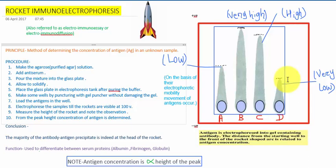Then place the glass plate into the electrophoresis tank. Before that, you need to pour the buffer solution into the electrophoresis tank. Then you need to make some wells in the glass plate by puncturing with gel puncture without damaging it. Then load the antigen and electrophorese the samples till the rockets are visible at 100V.